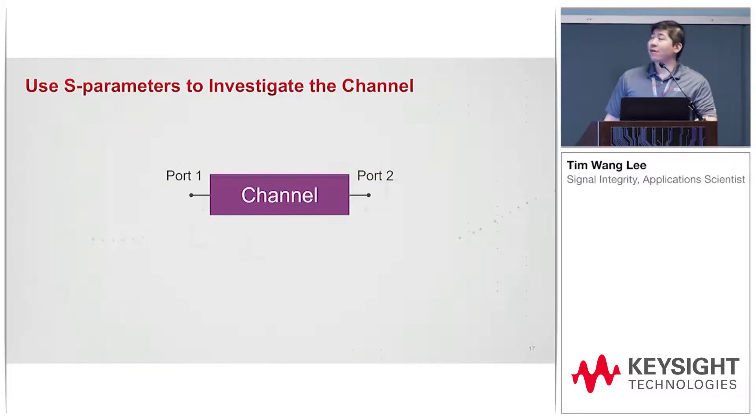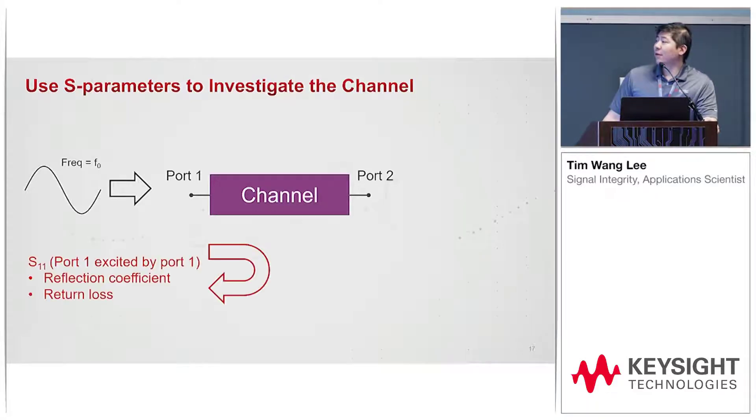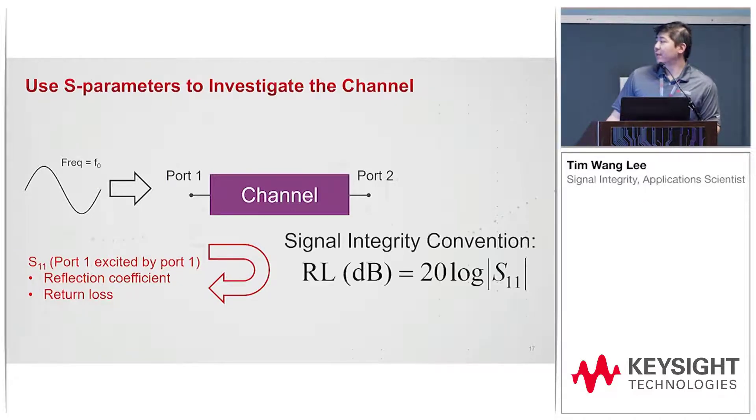A quick overview of S-parameters. If you have a channel, port one on the left, port two, at a certain frequency f naught, we'll send in a sine wave. Whatever is coming back, that's S11. It's excited by port one, also known as the reflection coefficient and the return loss.